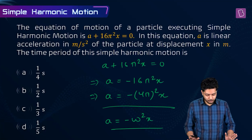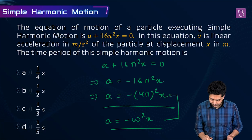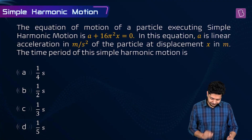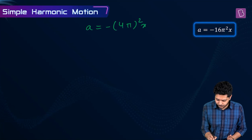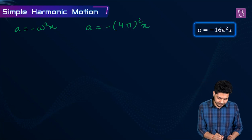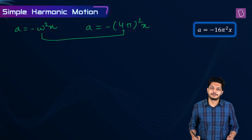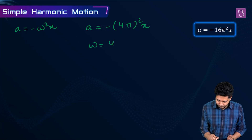So a equals minus ω²x, and we can compare these two equations directly. From a equals minus 16π²x and the general equation a equals minus ω²x, we can say that ω equals 4π.